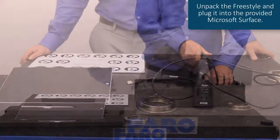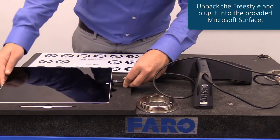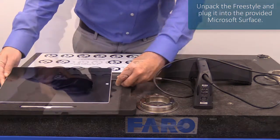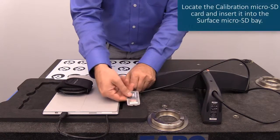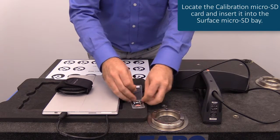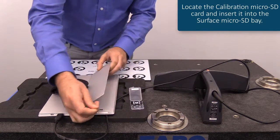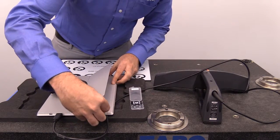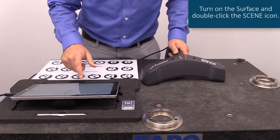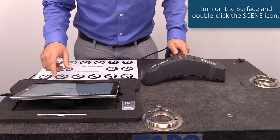Unpack the Freestyle and plug it into the provided Microsoft Surface. Locate the Calibration Micro SD card and insert it into the Surface Micro SD Bay. Turn on the Surface and double-click the SCENE icon.